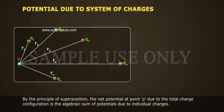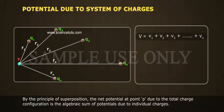By the principle of superposition, the net potential at point P due to the total charge configuration is the algebraic sum of potentials due to individual charges. V is equal to V1 plus V2 plus V3 plus so on plus Vn.